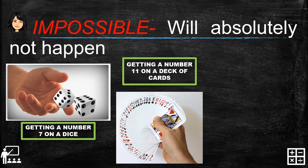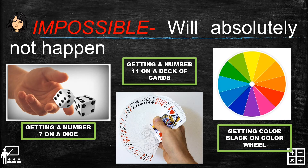Another example of impossible: getting the number 11 on a deck of cards. We all know that the number 11 is represented by a J or Jack, so there is zero percent chance of getting the number 11 on a deck of cards. Also, getting the color black on a color wheel — as you can see on our color wheel, there is no black, so it is impossible to happen. These are some examples of impossible probability outcomes.